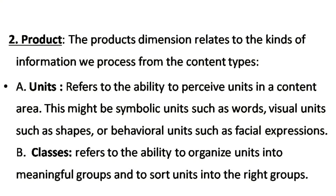The second dimension is product. The product dimension relates to the kinds of information we process from the content types. The first product is units — units refers to the ability to perceive units in a content area. This might be a symbolic unit such as words, a visual unit such as shapes, or a behavioral unit such as facial expressions.